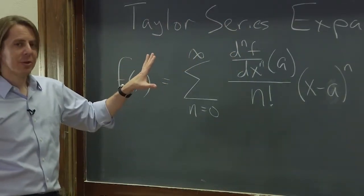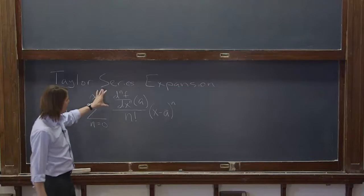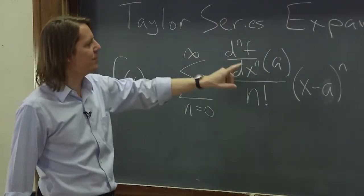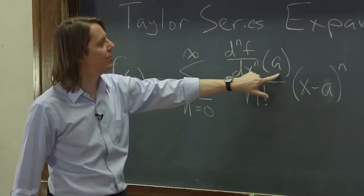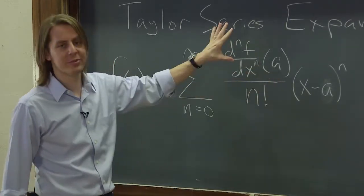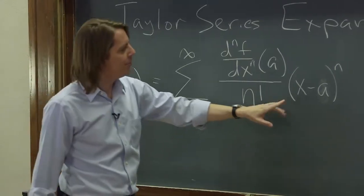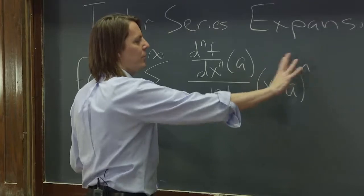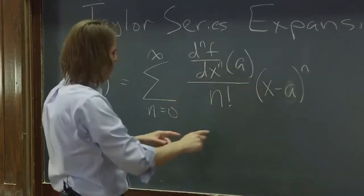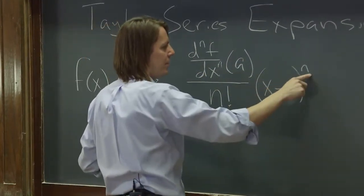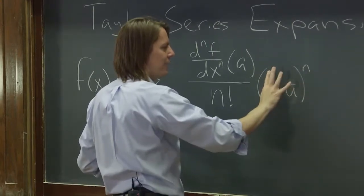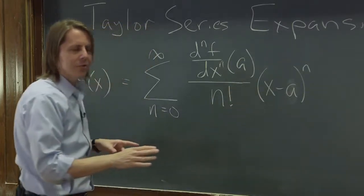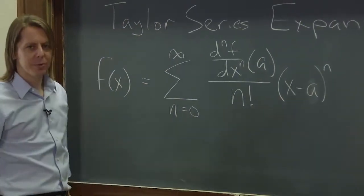You might be able to tell that this is going to make a polynomial function. This thing looks very complicated, but it's just a constant — you take the derivative of the function, do all this stuff, but you plug in a, which is just a number. When n equals 0, anything to the 0 is 1, so the whole thing is just a constant. When n equals 1, it's x to the 1; n equals 2, it's x squared; n equals 3, it's x cubed, etc. So you're turning this function into an infinitely long polynomial.